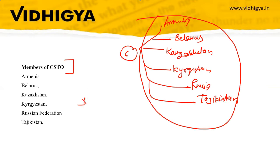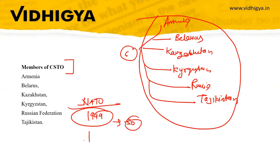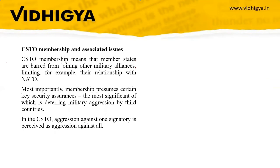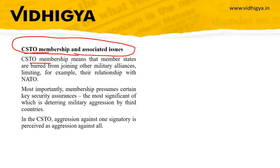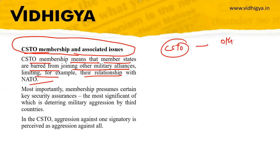By comparison, NATO came into existence in 1949 and has 30 countries — it is also a collective defense mechanism. Regarding CSTO membership, member states are barred from joining other military alliances, limiting their relationship with NATO. So if you are a member of CSTO, you cannot be part of another military alliance — this is one key restriction.